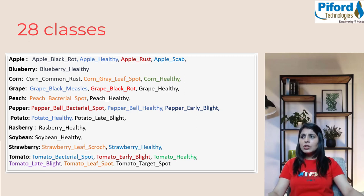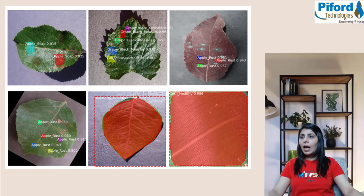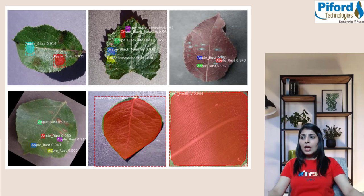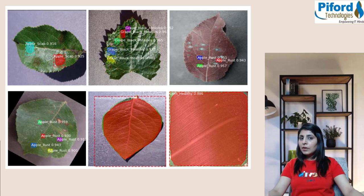Let me show you what kind of output you will get after performing Mask RCNN on the Plant Village dataset. You can see here: Apple Scab with 91–92% probability, the second image shows gray black rust, the third shows Apple Rust, the fourth also Apple Rust, the fifth is a Blueberry Healthy leaf, and the sixth is a Corn Healthy leaf. These are the kinds of results you can achieve after annotating and training your algorithm.